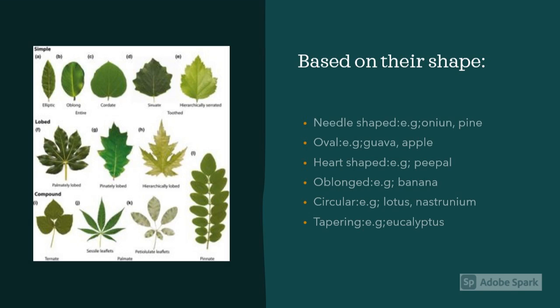Leaves can also be classified based on their shape. Some of the most common shapes are: needle-shaped leaf which is seen in pine, oval-shaped in apple, heart-shaped in peepal, oblong in banana, circular in nasturtium, and tapering in eucalyptus. The given image shows the other types of shapes of the leaf.